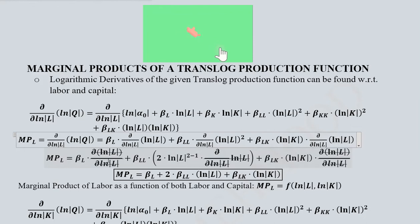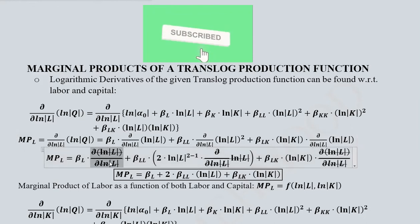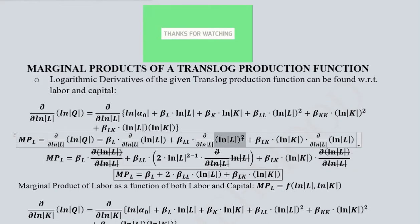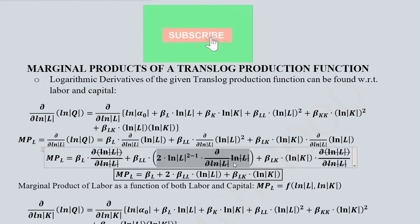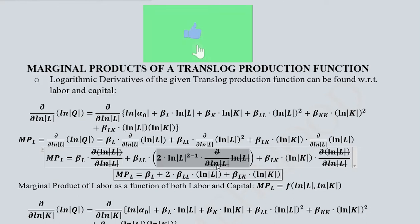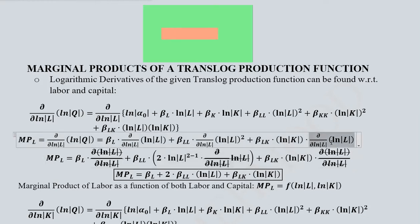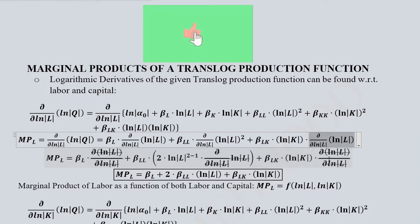Now it is very simple to calculate the derivatives of these terms. These two terms will be cancelled out. Here we will apply the power rule of differentiation — you can pause the video to see how this power rule is applied. There is nothing new except that the differentiation is logarithmic in nature, as the dependent and independent variables are in their natural logarithmic form. This will reduce to 1 because the terms in the denominator and the numerator are the same.